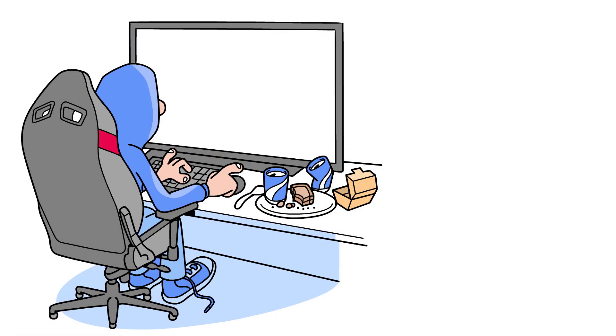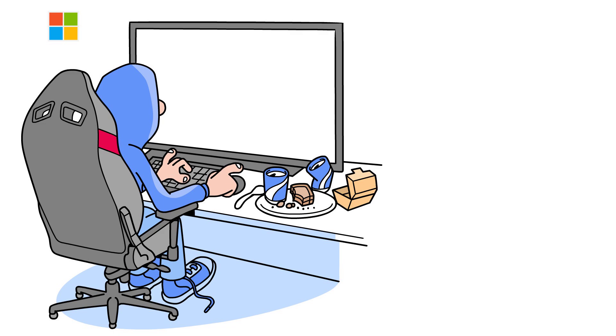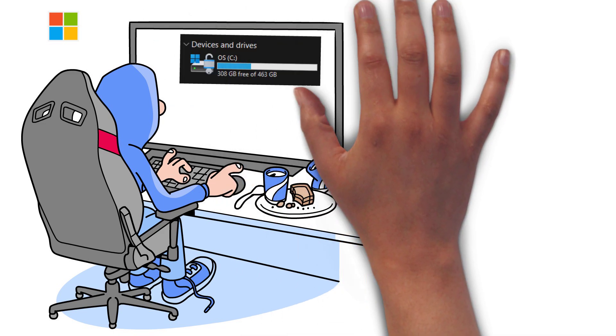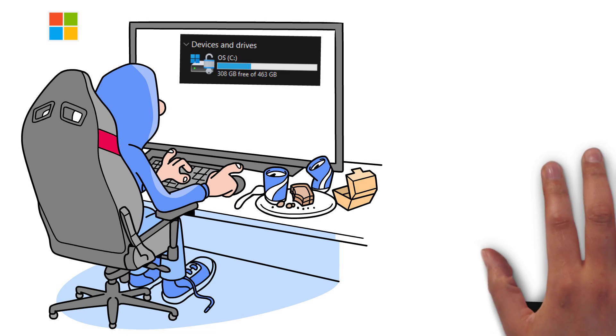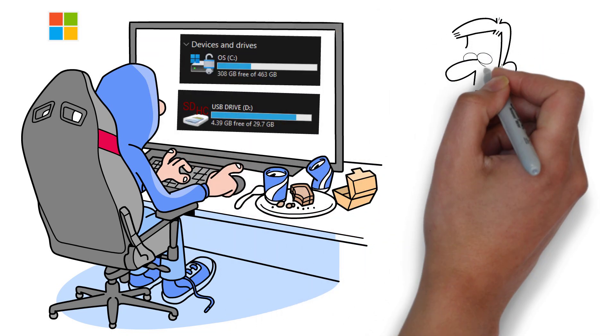If you've ever used a Windows computer and saved or organized files before, you've likely noticed the first drive listed is usually the C drive. If you add a second drive or external storage, it nearly always defaults to D. But what happened to the A and B drives?